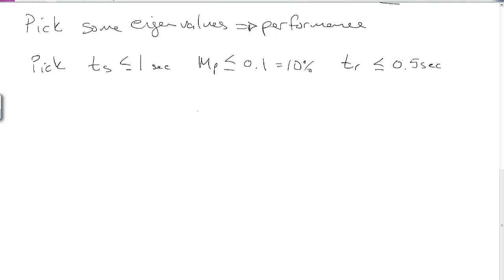We can calculate what the appropriate natural frequency and damping ratio for the closed-loop system would be using our rules of thumb. Ts equals 4.2 over zeta omega n. I'm using this bar notation to indicate these are the damping ratio and natural frequencies that we want. It has to be less than 1. Therefore, zeta bar omega n bar has to be greater than or equal to 4.2.